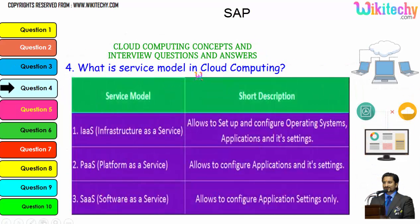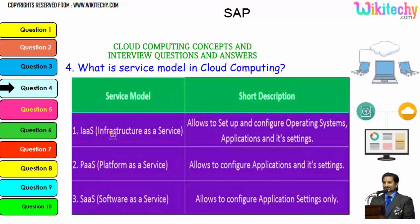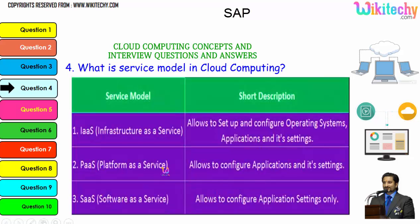The major service models in cloud computing are three. First, infrastructure as a service — you are given a server and can set up and configure any operating system, application, and its settings. Second, platform as a service — you are allocated a specified operating system and can install any applications and settings. Third, software as a service — you are given software and can configure application settings. That's how the cloud service models work.